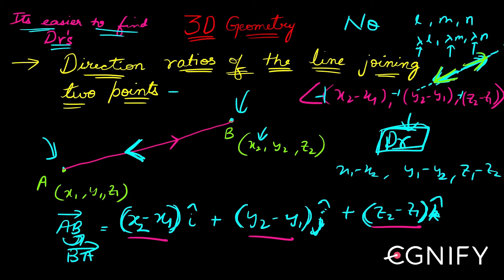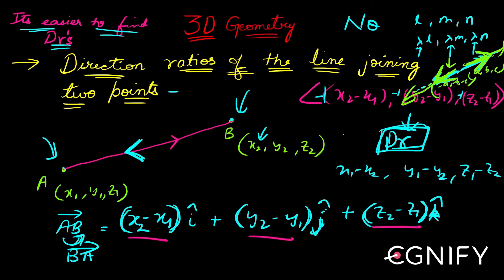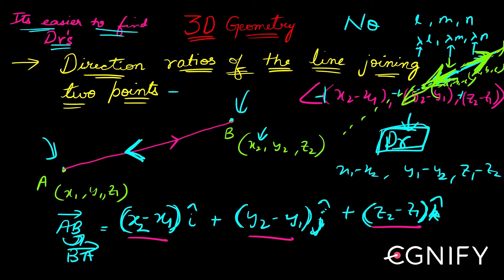However, direction cosines are different. If a, b, c are the direction cosines of vector AB, then -a, -b, -c are the direction cosines of vector BA. Direction ratios are the same for the entire line, regardless of the vector's direction or magnitude. But direction cosines are unique to whether the vector points this way or that way. With this, we complete the topic of direction ratios of the line joining two points.